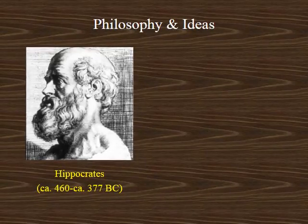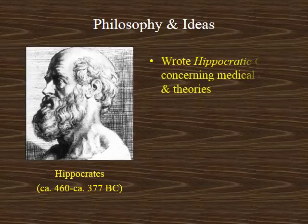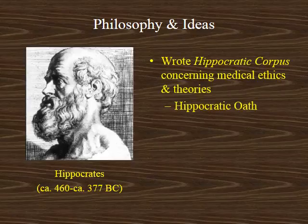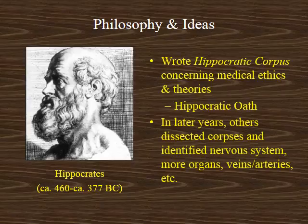One final individual is Hippocrates. His famous work was the Hippocratic Corpus and it addressed many issues involving medical ethics. Today his legacy is seen with the Hippocratic Oath. In later years, many other Greeks began to dissect corpses. As they did so, they were able to identify many different parts of the human body including the nervous system, several organs, as well as veins and arteries. They laid the foundation for a lot of medical science today.